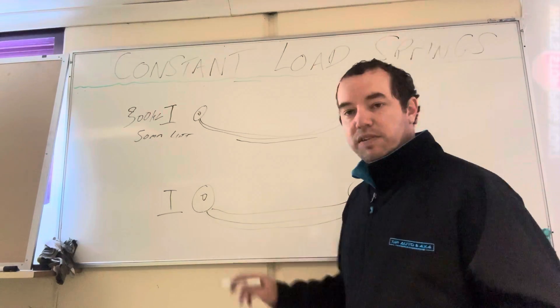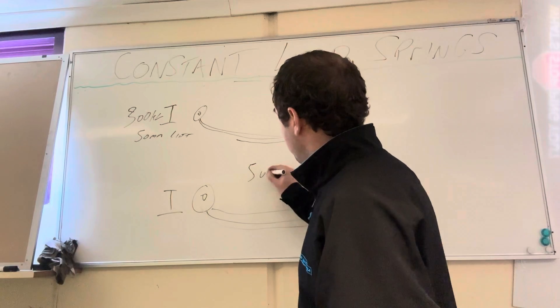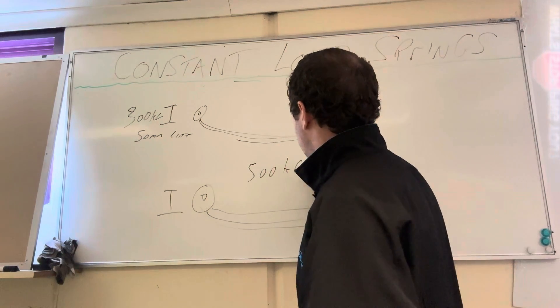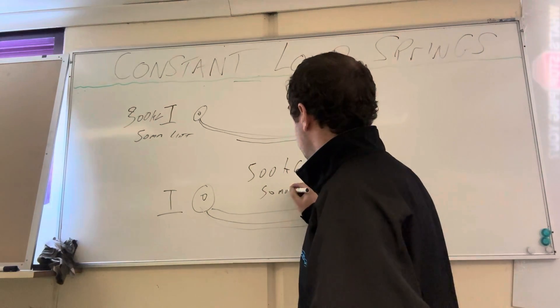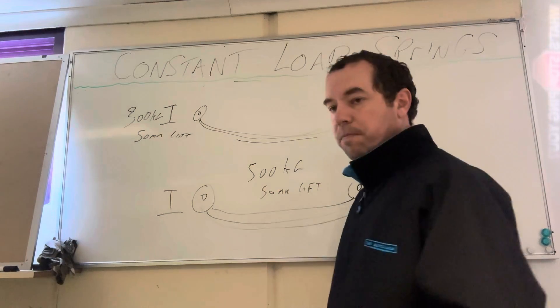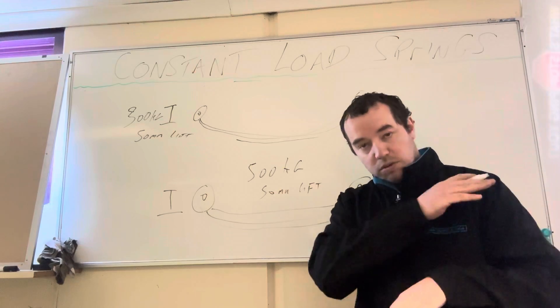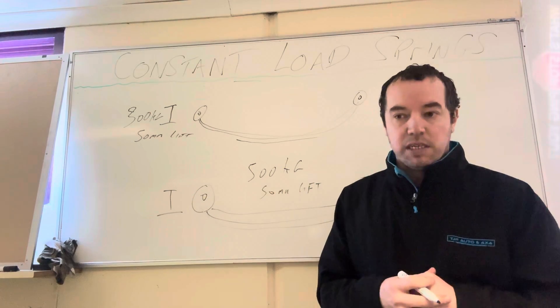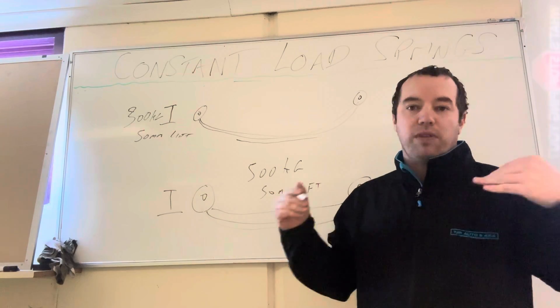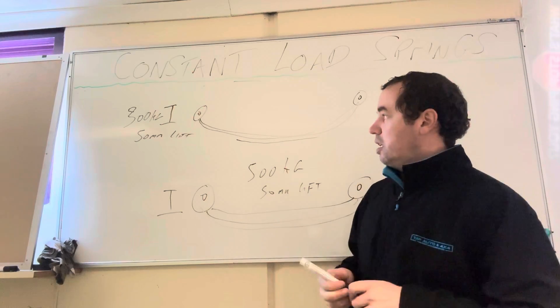Now the other one, to give you another idea, is say a 500 kilo constant at 50 mil lift. Which is the same thing - with 500 kilos on the back of the car, it will still give you 50 millimetres of lift and it'll handle that load basically better than a 300 kilo.